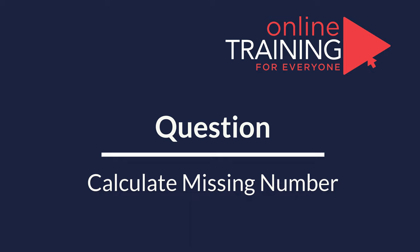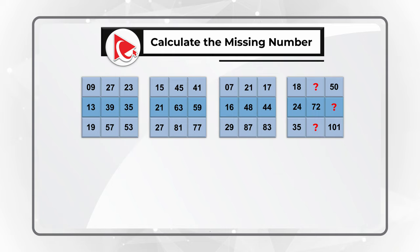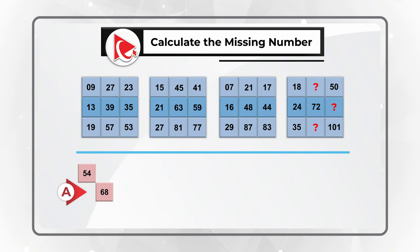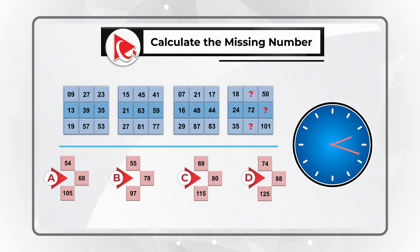Here is an amazing question which truly tests your analytical skills. You are presented with four sets of 3x3 matrices, each matrix having nine numbers. In matrix 4, there are three missing numbers you need to calculate. Choices are: A — 54, 68, and 105; B — 55, 78, and 97; C — 69, 80, and 115; D — 74, 88, and 125. Give yourself maybe 20 to 30 seconds by pausing this video to see if you can come up with the solution.